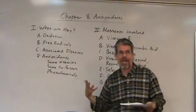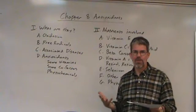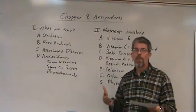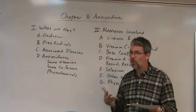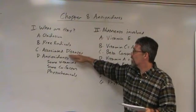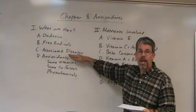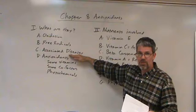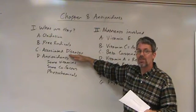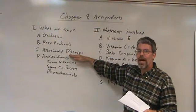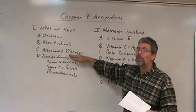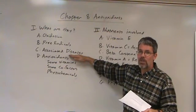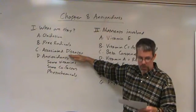Free radicals are essentially unstable versions of atoms or molecules that want to become stable by reacting with things, and if they react with things, they tend to damage them in the process. Your notes list a variety of disorders and diseases that are at least somewhat linked to oxidative damage to molecules or cells.